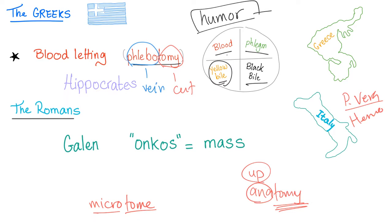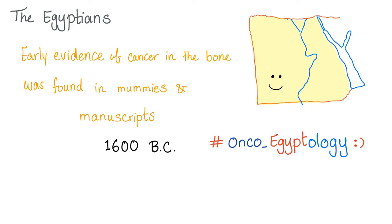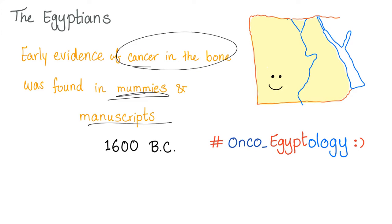Let's leave the Greeks and go to the Romans. Galen discovered masses and called them oncoses — that's where we get the word oncology from, the study of masses. Tumors are very old from a historic standpoint. As a proud Egyptian, let me talk about my ancestors. The Egyptians discovered early evidence of bone cancer in mummies and manuscripts — thousands of years ago, cancer is very old.